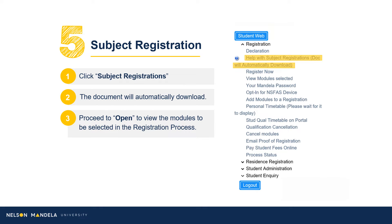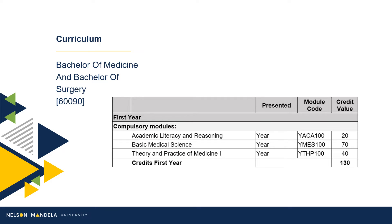Step 5 — Subject Registration: Download the Curriculum Qualification document containing the modules for annual completion. On-screen is a duplicate of the information reflected in your PDF download. All modules to be selected for first year are indicated on-screen.